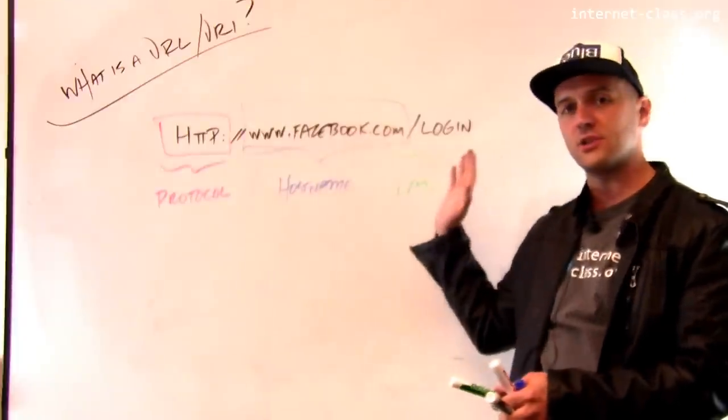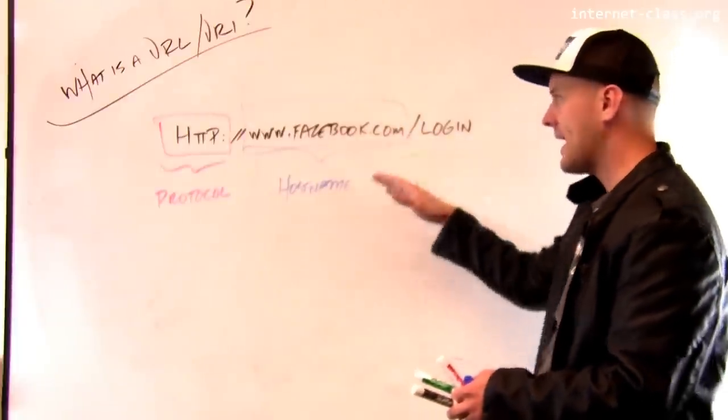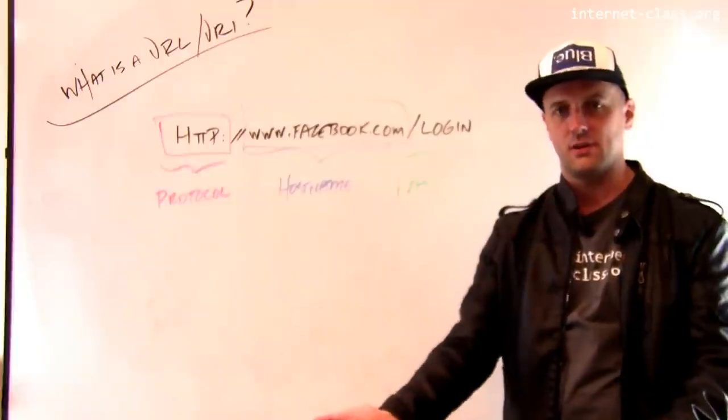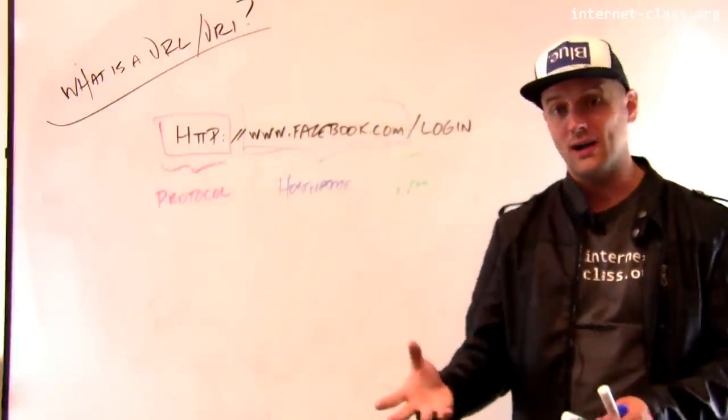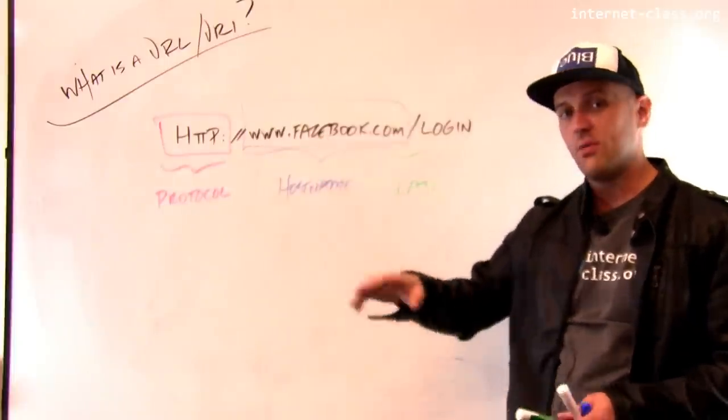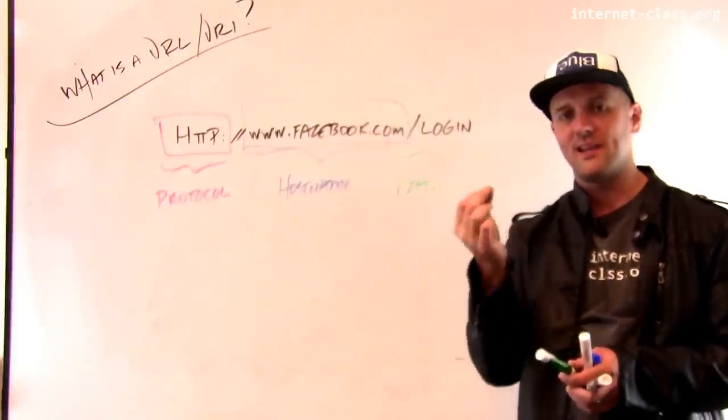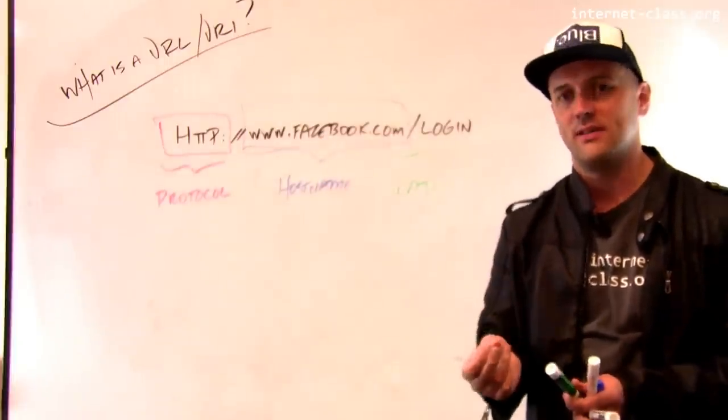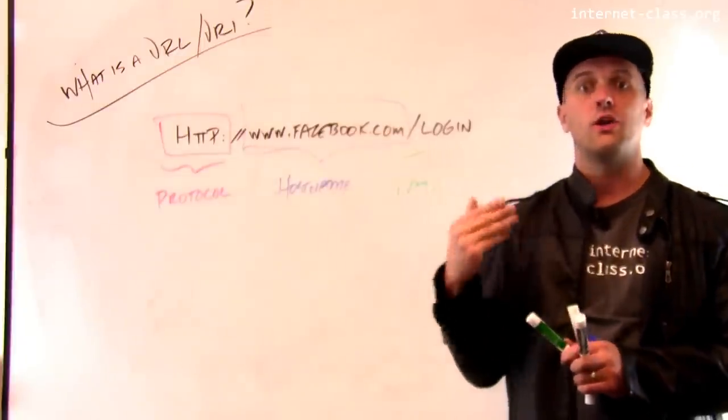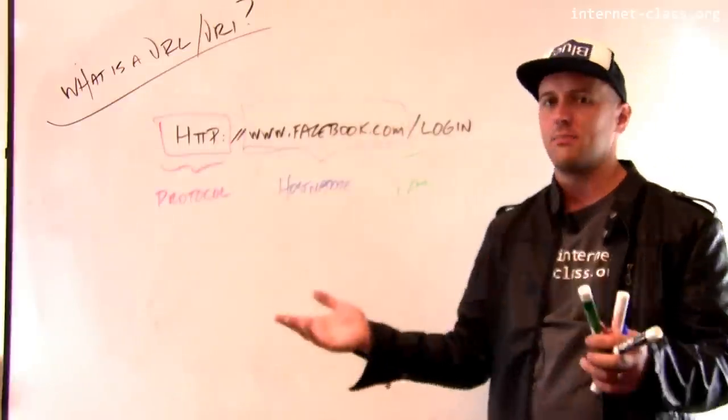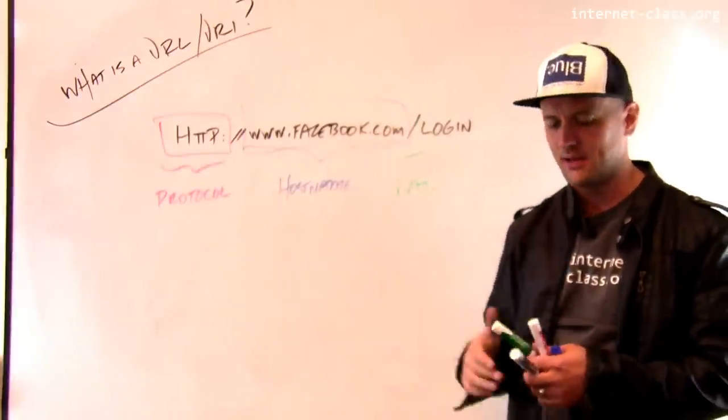So this is almost like making a function call, a remote function call, and the path is providing information to that function call. And you can set up a web server to interpret this path pretty much however you want. But in a lot of cases, just be aware that the path doesn't identify a static document. Instead what it does is it provides more information to the web server that indicates what you want to do. So in this case, I want to show the login page. I don't even know if this exists. I just kind of made this URL up.